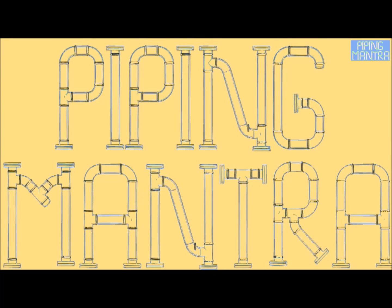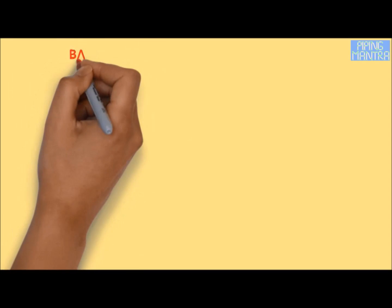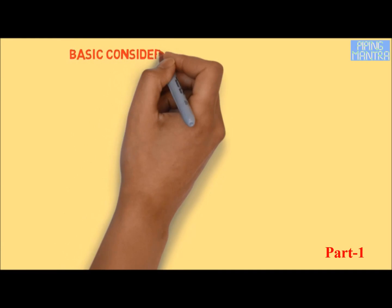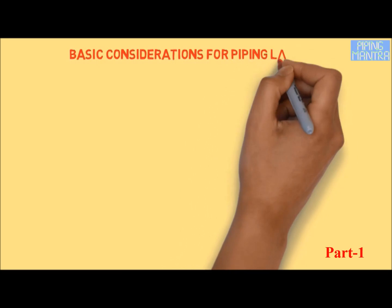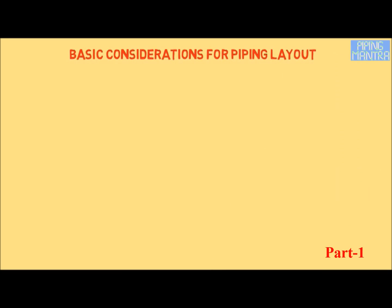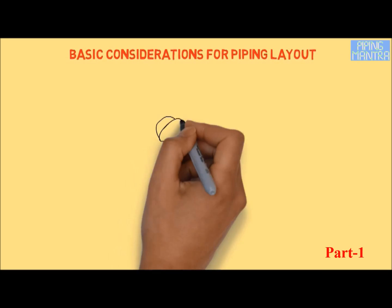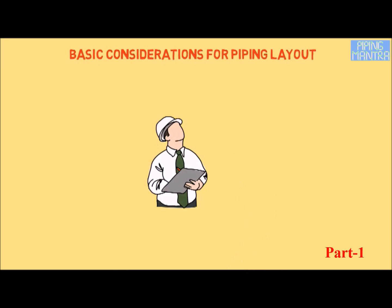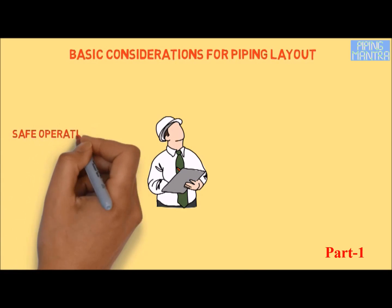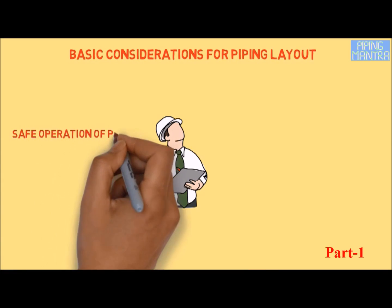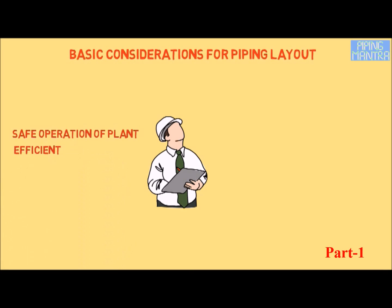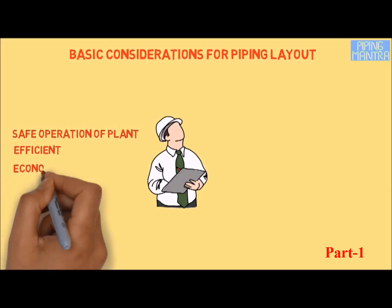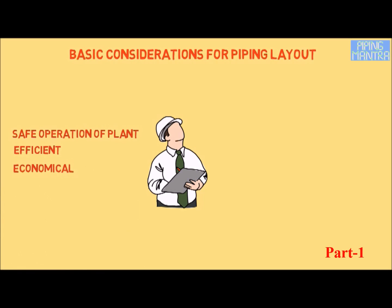Hello friends, welcome to our channel Piping Mantra. Today we are going to talk about basic considerations for piping layout. One of the most important aspects of piping design is piping layout, or piping arrangement. While preparing a piping layout, you should think about safe operation of the plant; at the same time it has to be compact, efficient, and economical.